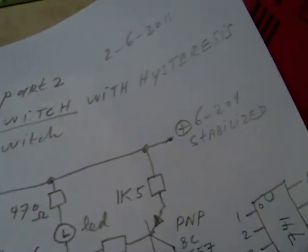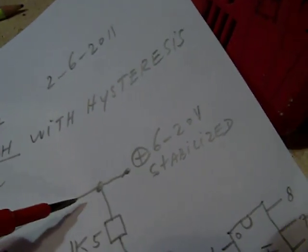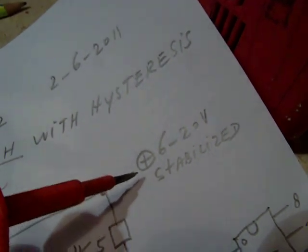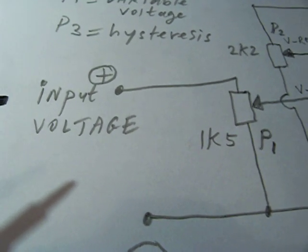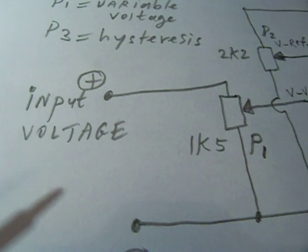The supply voltage can be between 6 and approximately 18 volts or 20 volts, and the input voltage between let's say 6 volts and approximately 14 volts or so.